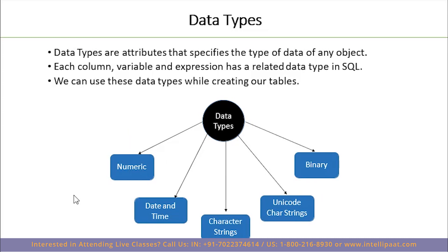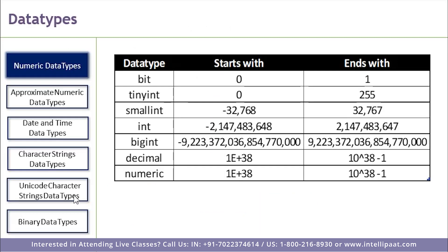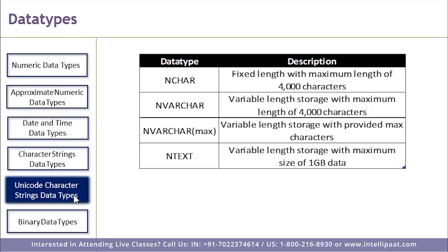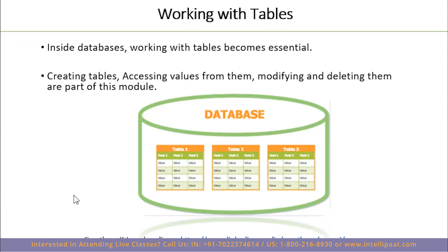Talking about data types, there are multiple data types which MySQL supports. We can see data types in depth while creating tables, but on a higher level it has numerical data, date and time data, character strings, unicode character strings, and binary. Each data type is given detailed notes on how many characters it allows, its specifications, numeric data types, approximate numeric data types, date and time data types, character string data types, unicode character data types, and binary data types. Data types are arguments we supply into tables to define what kind of operations can be performed — for example, arithmetic operations can only be performed on numerical columns.